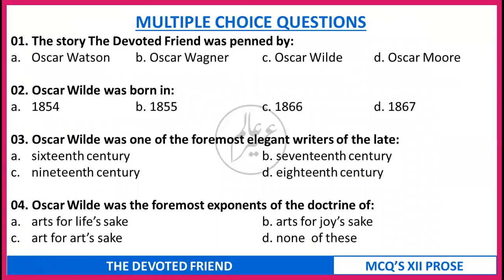पहला MCQ: The Story of the Devoted Friend was written by (a) Oscar Watson, (b) Oscar Wagner, (c) Oscar Wilde, (d) Oscar Moore. Oscar Wilde was born in (a) 1854, (b) 1855, (c) 1866, (d) 1867. Oscar Wilde was one of the foremost elegant writers of the late (a) 16th century, (b) 17th century, (c) 19th century, (d) 18th century. Oscar Wilde was the foremost exponent of the doctrine of (a) arts for life's sake, (b) arts for joy's sake, (c) arts for art's sake, (d) none of these.